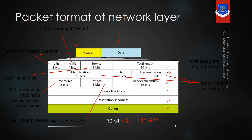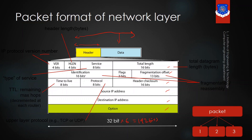The type of service field tells how the packet should be handled — options include delay, reliability, minimum cost, throughput, etc. Total length tells the total length of the packet in bytes. The three fields — identification, flags, and fragmentation offset — are used when the packet is divided into more than one part. The identification field tells the number of the packet, flags indicate whether the packet is divided into fragments, and fragmentation offset is used when reassembling the packet to its original form.